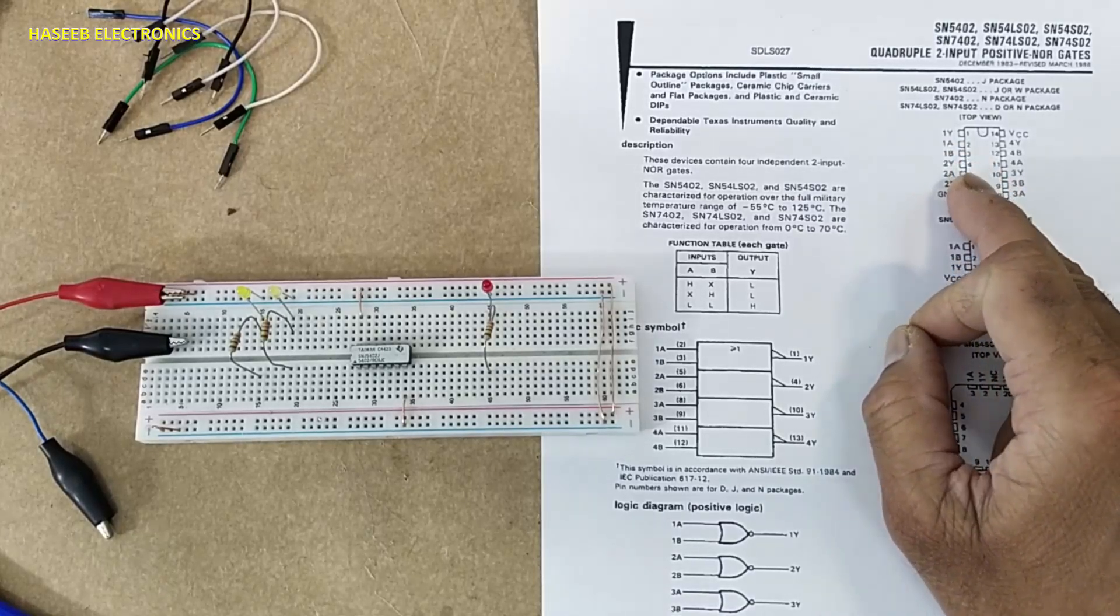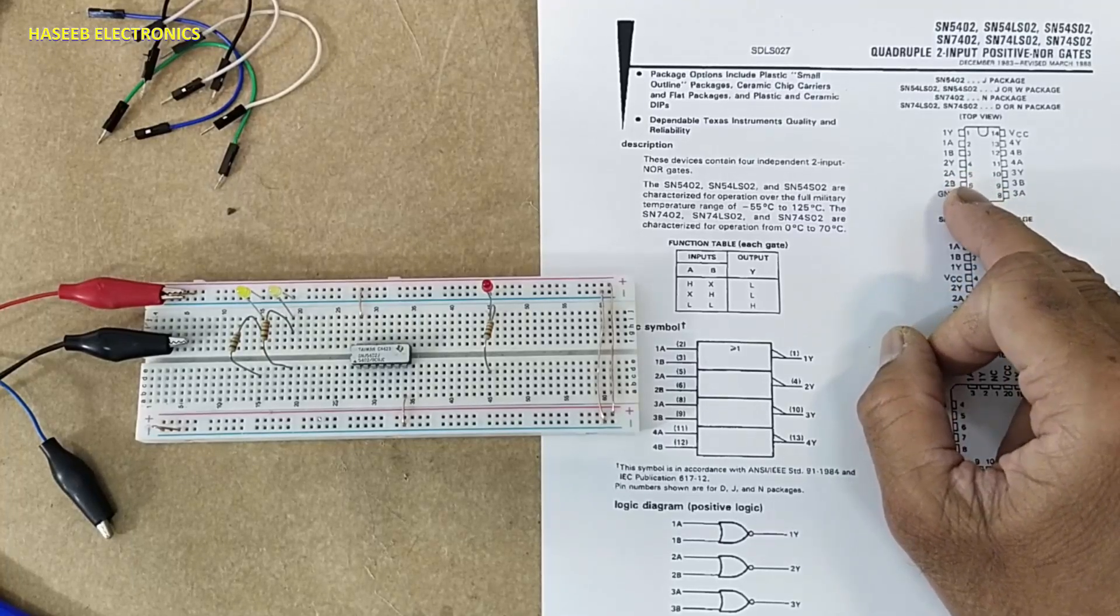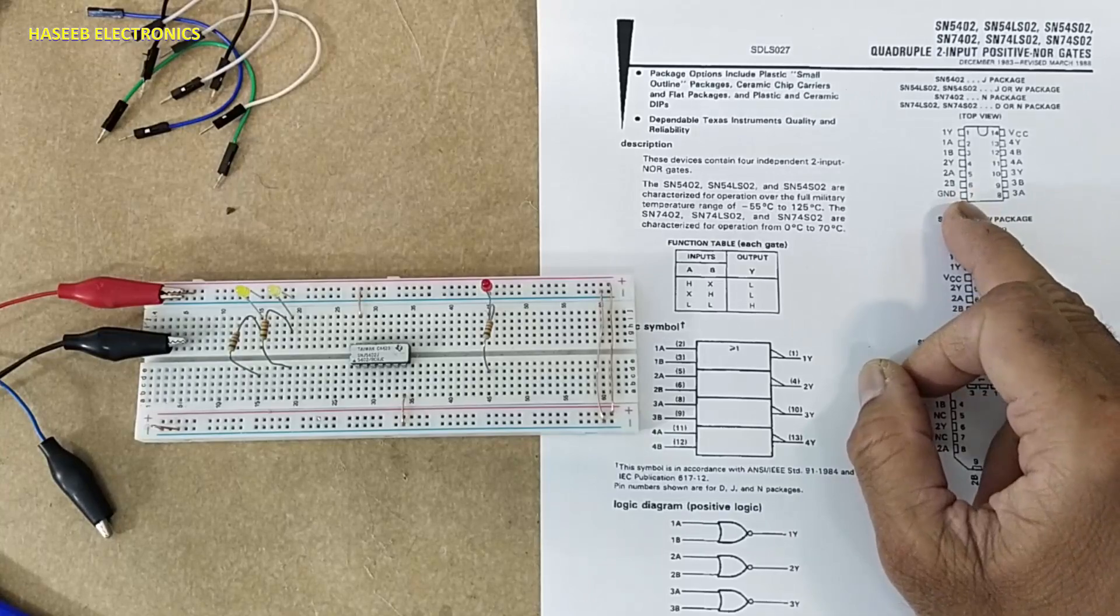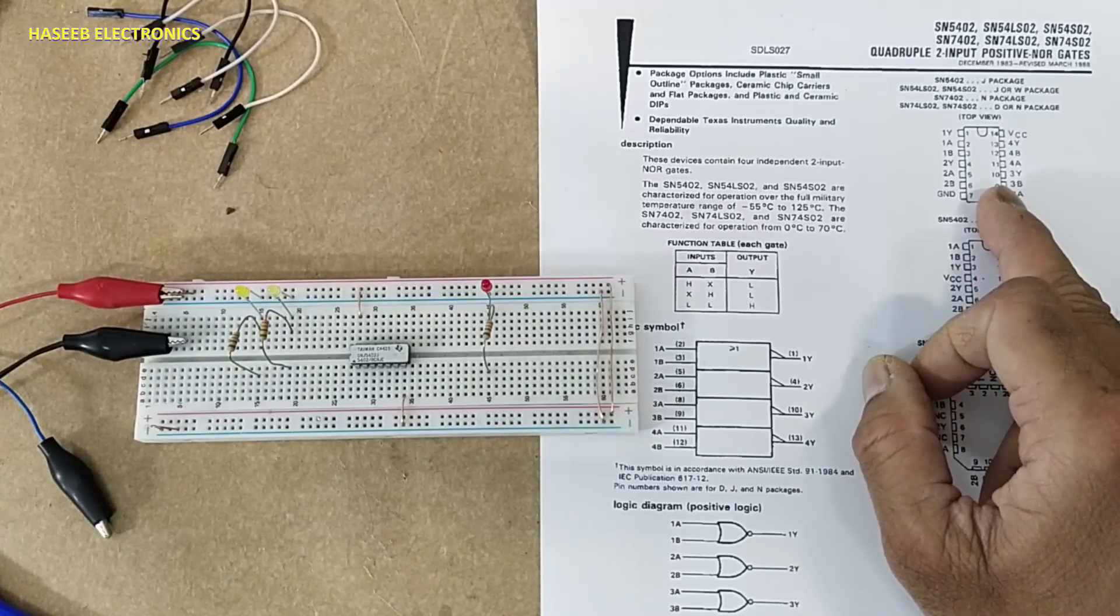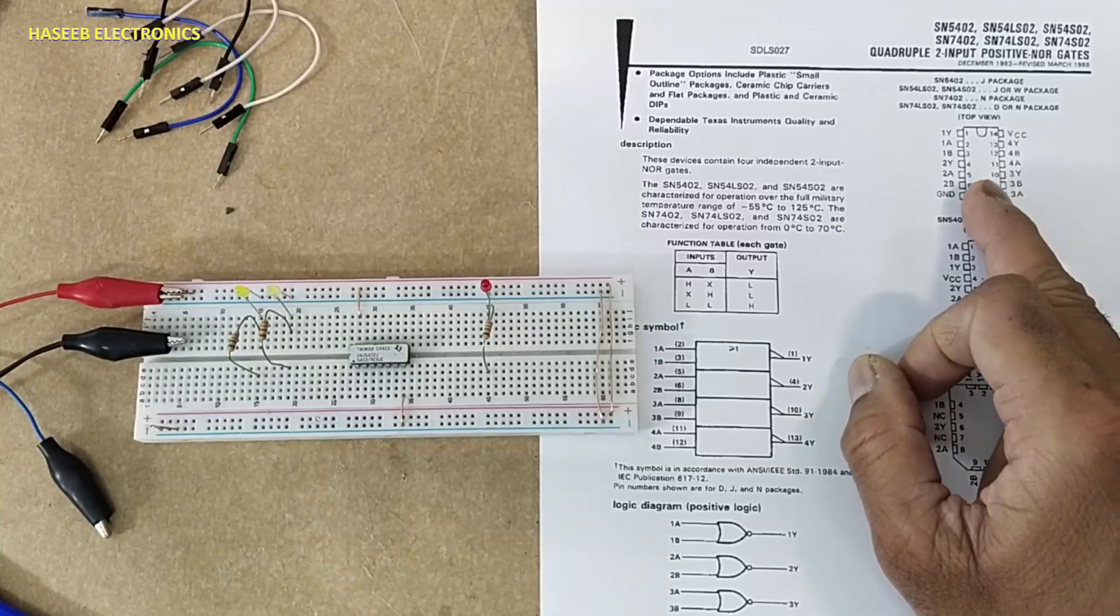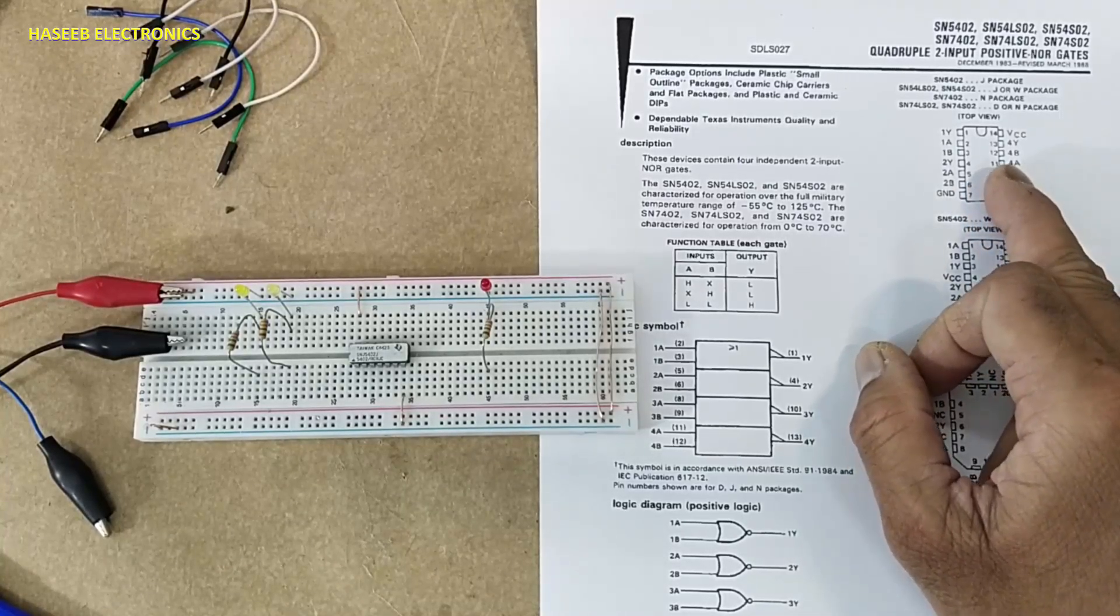Pin number one is first gate output. Two and three are input for first gate. Pin number four is second gate's output. Five and six are input for second gate. Pin number seven is ground. Pin eight, pin nine are input for third gate. Pin number ten is output for third gate.